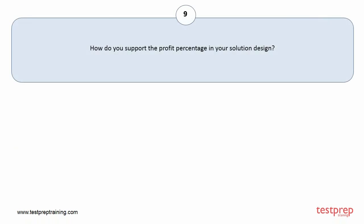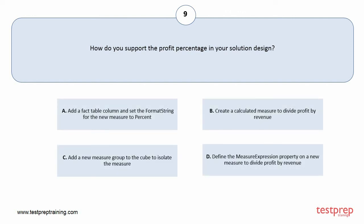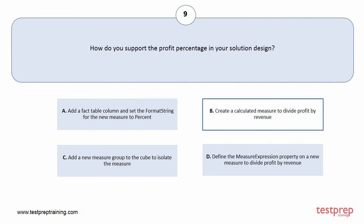Question number 9. How do you support the profit percentage in your solution design? Your options are: A. Add a fact table column and set the format string for the new measure to percent. B. Create a calculated measure to divide profit by revenue. C. Add a new measure group to the cube to isolate the measure. D. Define the measure expression property on a new measure to divide profit by revenue. The correct answer is option B.